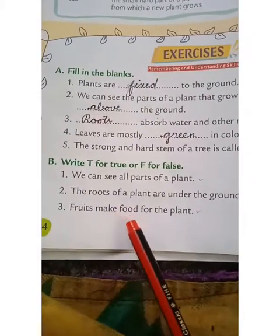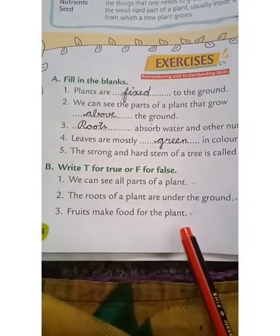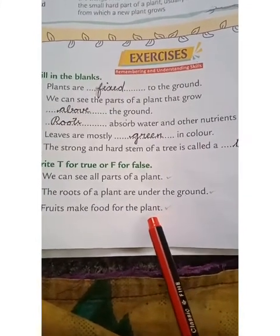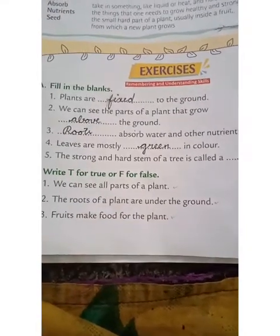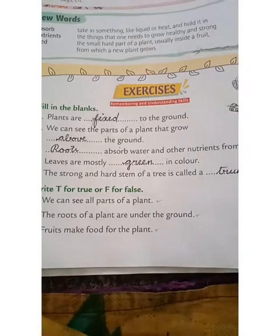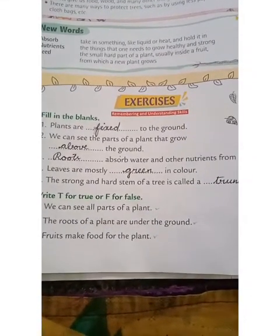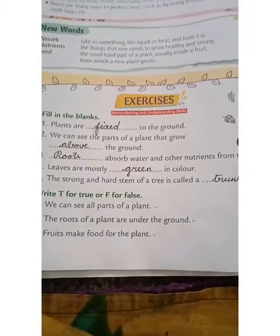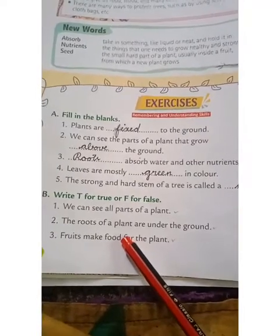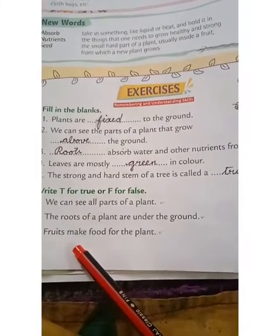Third one: fruits make food for the plant. No — fruits do not make food. Leaves make food for plants using sunlight and water. So this is false. Answer: false.